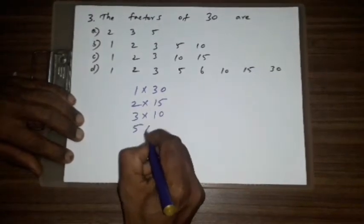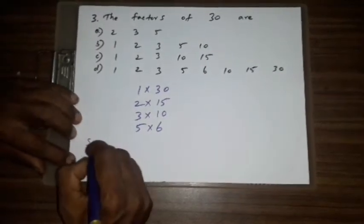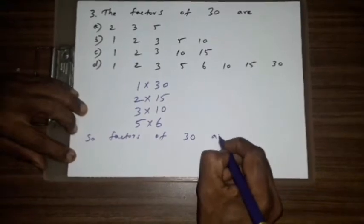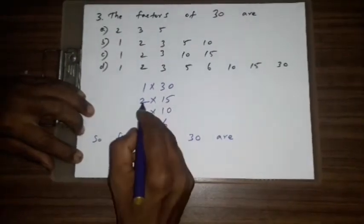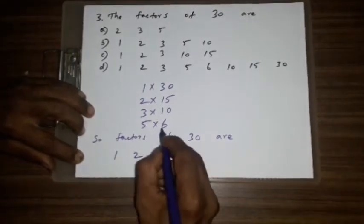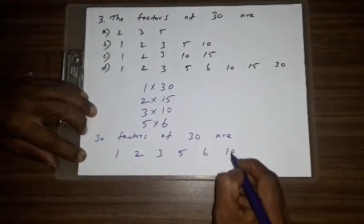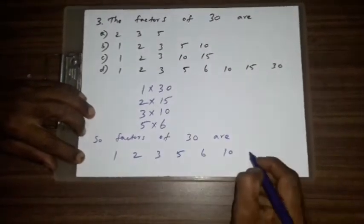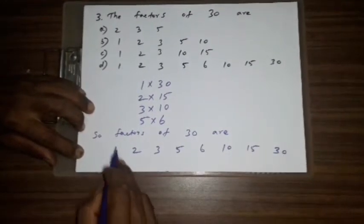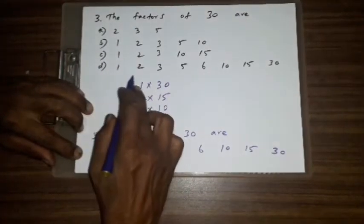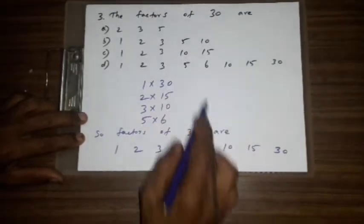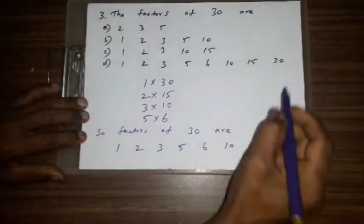So factors of 30 are 1, 2, 3, 5, 6, 10, 15, 30. So where is it? A, B, C, D: 1, 2, 3, 5, 6, 10, 15, 30. So D is the correct answer.